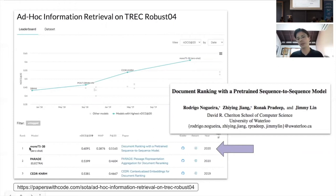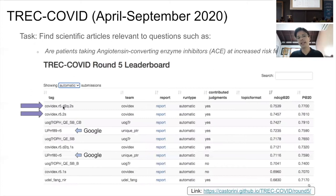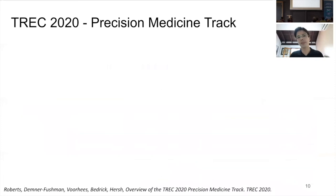We also participated in the TREC-COVID competition, which ran from May to September 2020. The task was to find scientific articles relevant to COVID-related questions. We participated in all five rounds and were either top or second on the leaderboard, competing against strong teams like Google and the University of Glasgow, using only this Expanded Mono Duo pipeline without any modification.